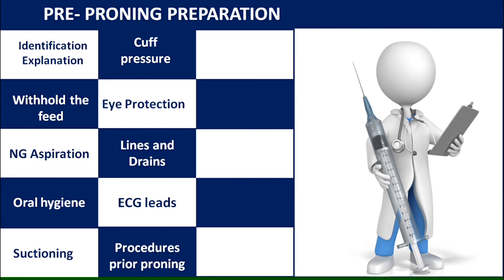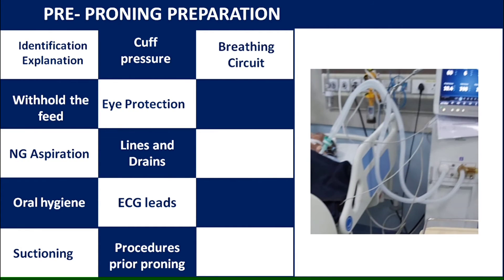ECG leads are removed from the chest because after positioning the patient to prone, they are placed on the back of the patient. If there are procedures like central venous catheterization or Foley catheterization, they must be done before prone positioning. Check the length of the breathing circuit to ensure it will be adequate while turning the patient. Before proning, ABG sampling is to be done.